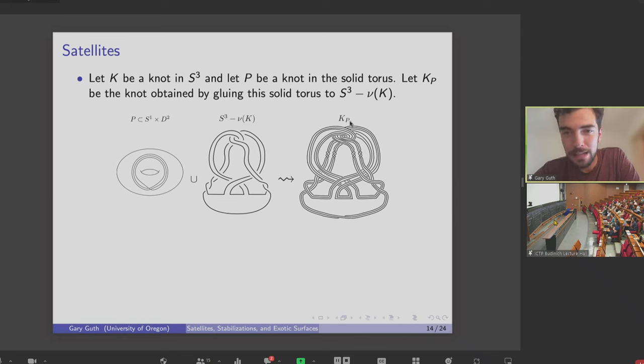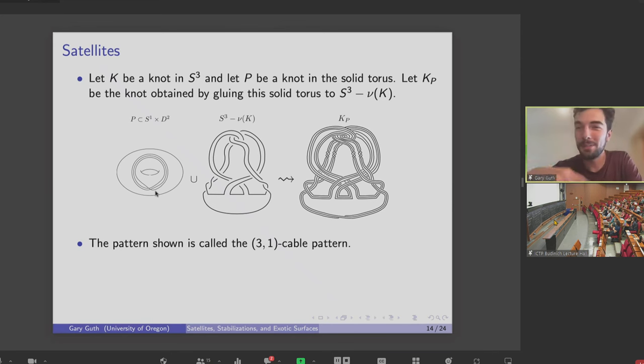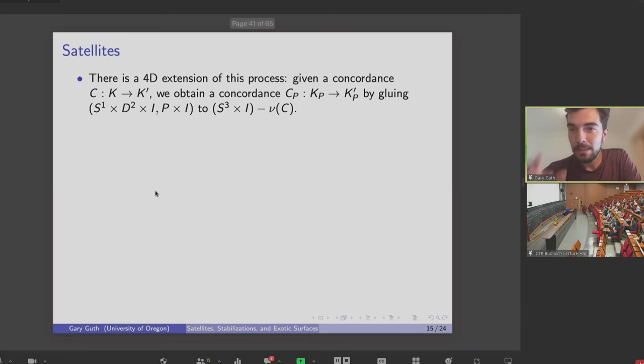When I do that, I get what's called the satellite of P with pattern K. And as you can see, well, this satellite knot is sort of clearly related to K, but it's got some more complexity due to the complexity of the pattern. So this pattern that we've shown is called the P-1 cable pattern. So cables are when I pick the pattern knots to be the torus knots. And here, P-1 means this knot wraps around the longitudinal direction P times and once around in the meridional. It wraps around once in the meridional direction.